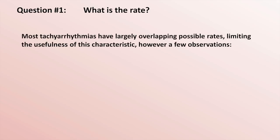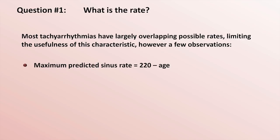Regarding the rate, most tachyarrhythmias have largely overlapping possible rates, limiting the usefulness of this characteristic in general. However, there are a few observations or possible exceptions. First, the maximal predicted sinus rate is approximately 220 minus the person's age in years. This is not an absolute rule — world-class elite athletes can violate it. However, if you encounter an 80-year-old man with a heart rate of 170, you can say with complete confidence that the patient does not have sinus tachycardia.